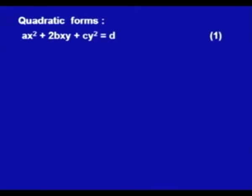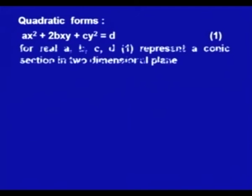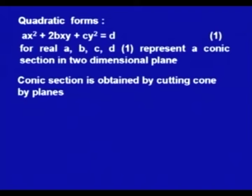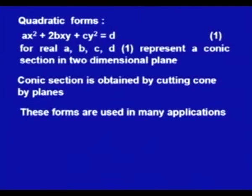We start with quadratic forms. We are all familiar with the quadratic form ax² + 2bxy + cy² = d. We call it a quadratic form because it has x², xy, and y² terms, and all these terms are quadratic. We say this form is a quadratic form provided a, b, c, and d are real numbers. For these real numbers, this expression represents a conic section in the two-dimensional plane, obtained by cutting cones by planes. These forms are used in many applications.